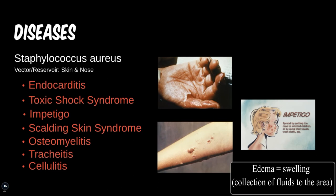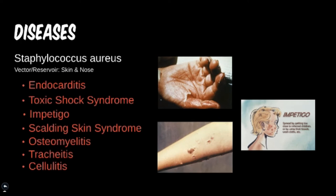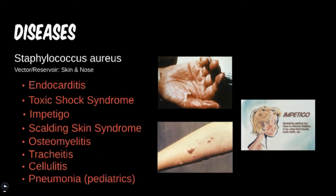We also have cellulitis on the list of common diseases for this pathogen. It is important to note the differences between cellulitis, impetigo, and other types of skin infections, particularly the different depths of infection. As with tracheitis, we can also develop pneumonia from staph aureus, though it is not as common as many other bacteria that cause pneumonia. Coughing and breathing can sometimes dislodge moisture and bacteria from the upper respiratory tract, allowing it to disseminate further down into the lungs.